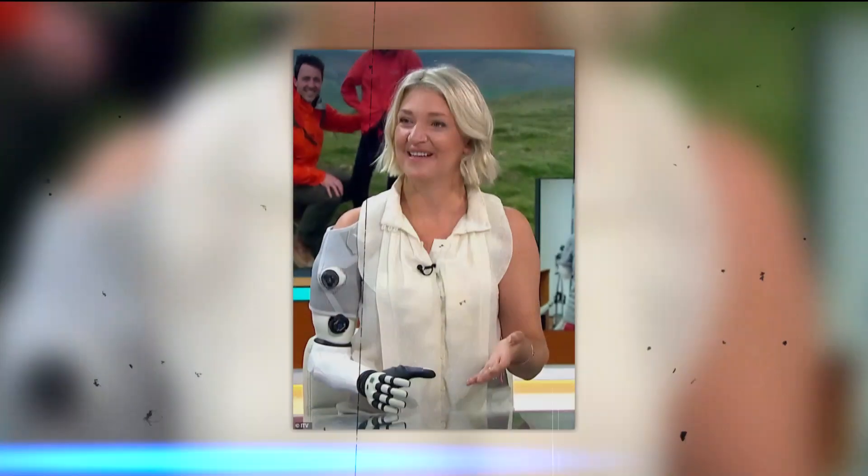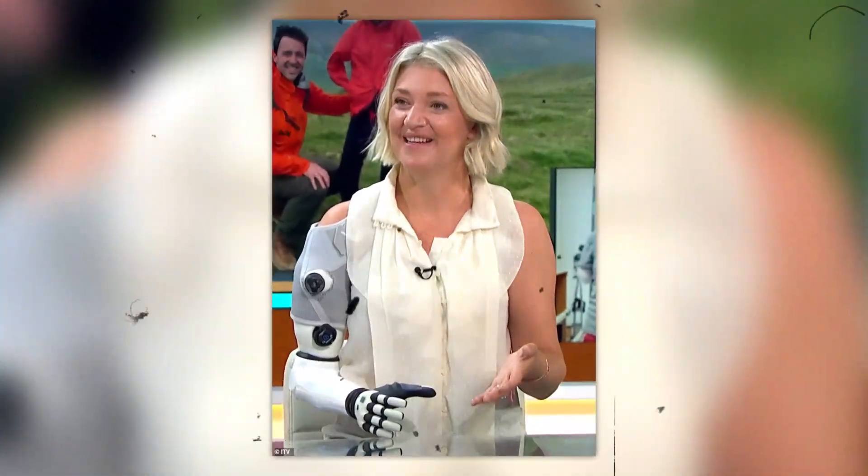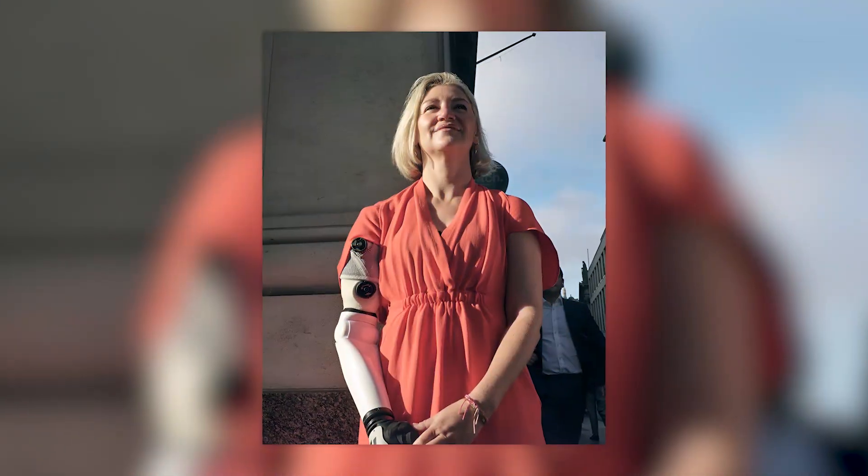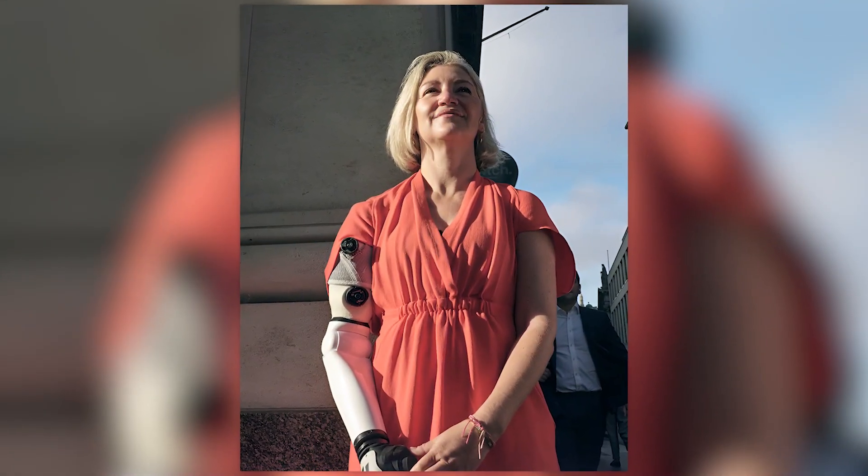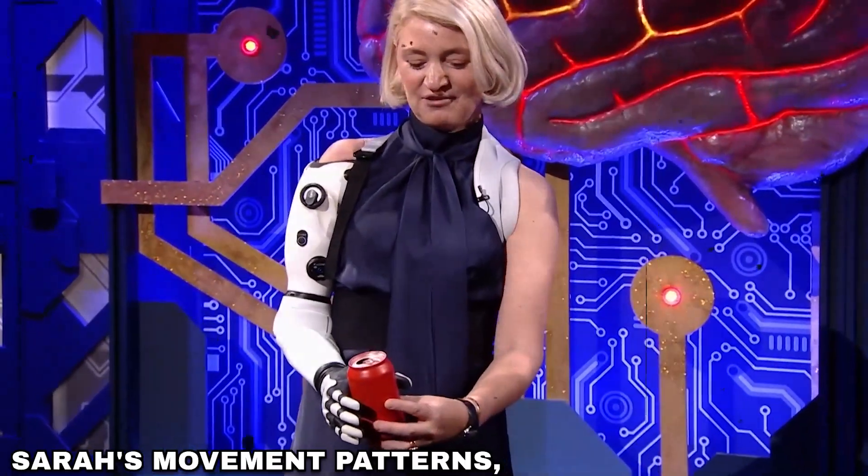The arm is equipped with 16 electrodes that detect small muscle twitches in her residual limb and translate them into varied motions by the prosthetic.